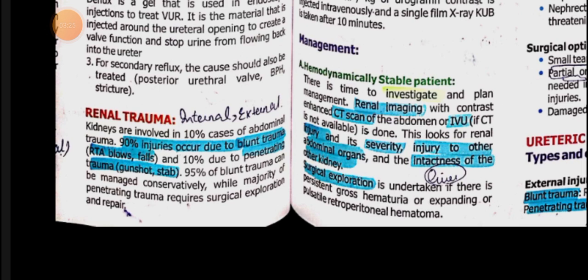Another classification is external versus internal. External injuries come from outside. Internal injuries are iatrogenic — for example, some instrumentation or procedure causes kidney trauma. So internal injuries are mostly iatrogenic, while external can be blunt or penetrating.